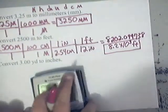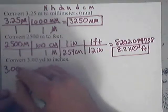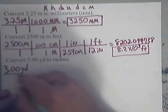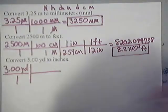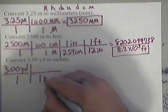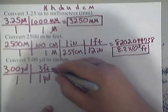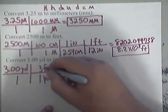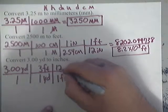Now, on the last one, this is a little bit easier. Take the given, which is 3 yards, 3.00 yards, put it over 1. What do you know about yards and inches? Well, we know that in 1 yard, there are 3 feet, but that's not inches. But we do know this, we know that in 1 foot, there are 12 inches.